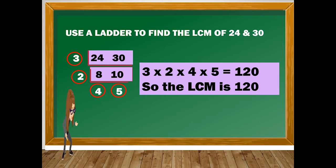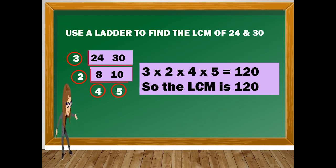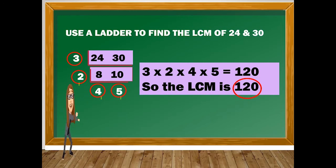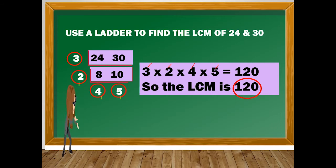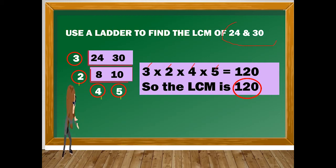What is left is 4 and 5. Now to find the LCM, we multiply all the numbers on the outside: 3 times 2 times 4 times 5 equals 120. So the LCM of 24 and 30 is 120.